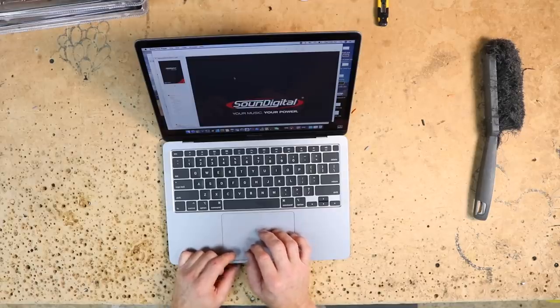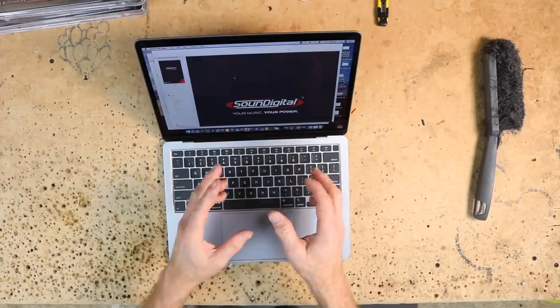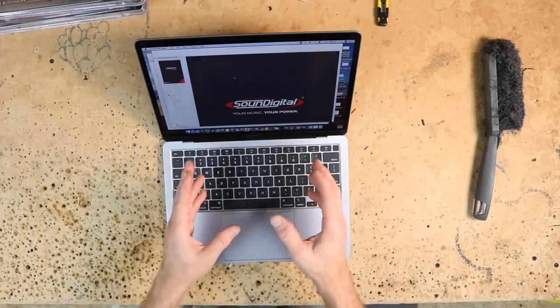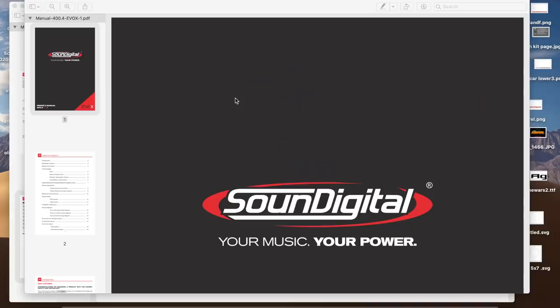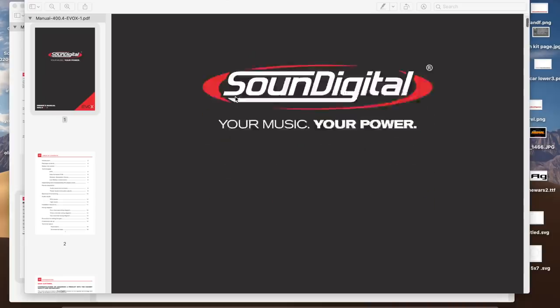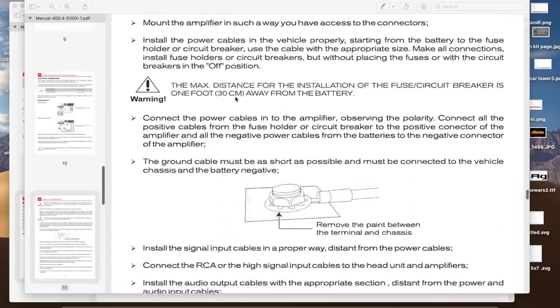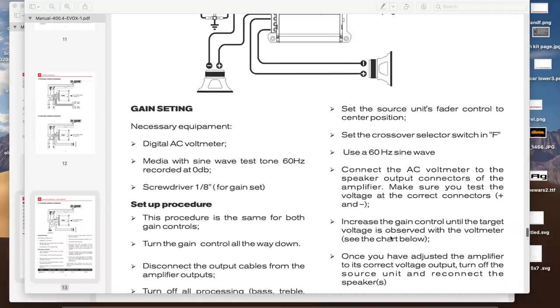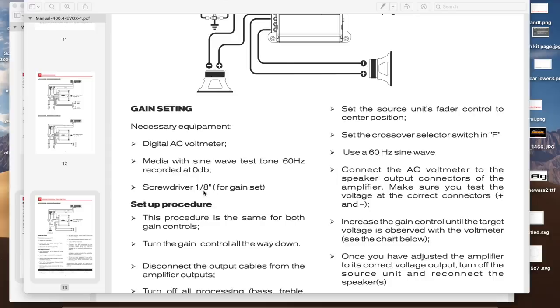To set the gain on the amplifier and the owner's manuals for each amplifier, they go through how to do that. We're going to do the exact same thing. Here, we have the owner's manual for the 404. If we scroll down on page 13, it talks about setting up the gain. For this, you'll need a digital AC voltmeter, a media with sine wave and a test tone of 60 hertz at 0 dB and an eighth inch screwdriver. If you don't have an test tone, you can go to sounddigital.com slash tracks for setup and download it there.